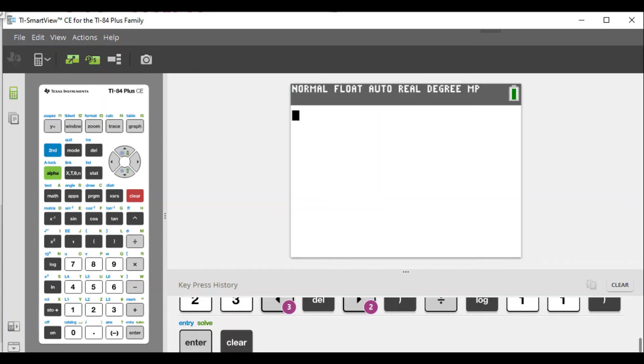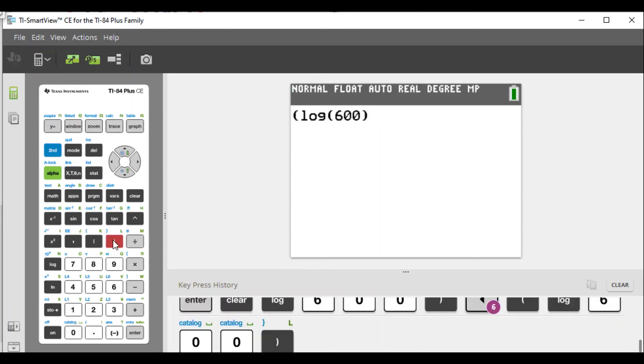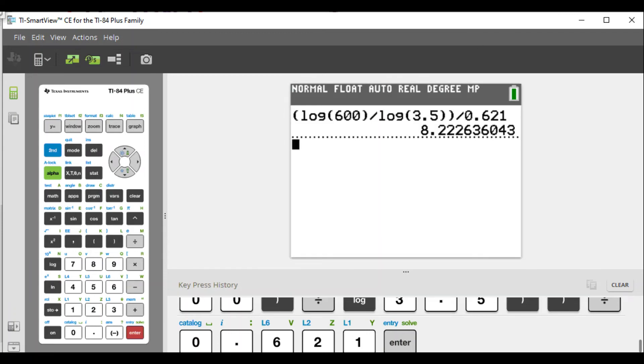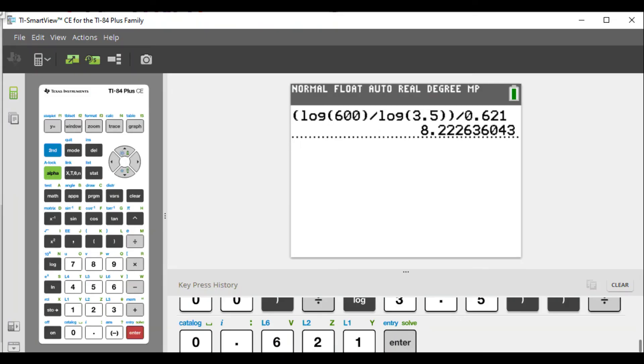What we're going to do is use our graphing calculator to find this value. So parenthesis, log of 600, close parenthesis, divided by log of 3.5, close parenthesis twice, divided by 0.621. That's what it's going to look like, exactly what we wrote out before. We are going to get 8.222636043.